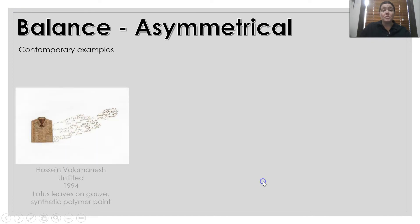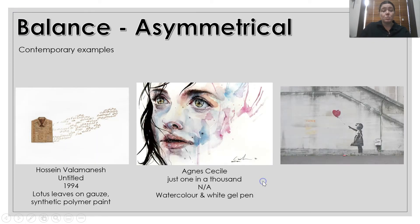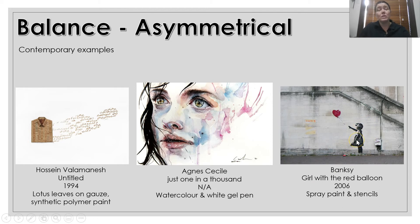Some asymmetrical balance examples with contemporary artworks. We have Vala Manesh, so we have a heavier side on the left than the right. Cecilie — the portrait of the girl is heavier on the left than the right. And Banksy — you've got the girl with the balloon, so you've got one side on the right heavier than the balloon on the left.